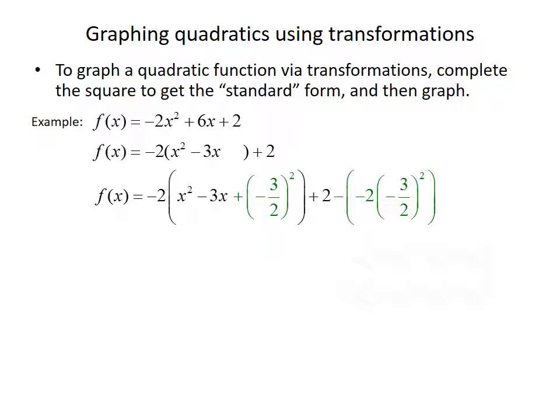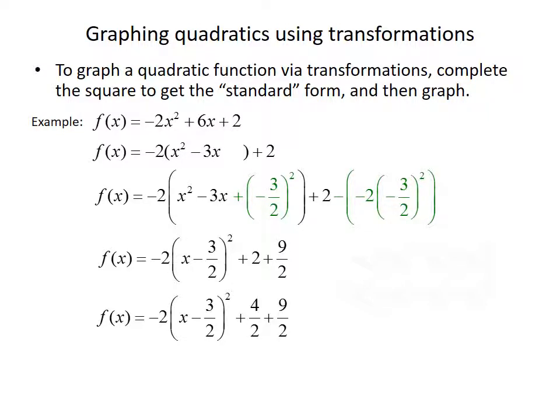We add that inside the parentheses to complete the square, and outside we need to subtract it. Since negative 3 over 2 squared is inside the parentheses, it's being multiplied by negative 2. When we subtract the term from the outside, we also incorporate that negative 2, so we subtract negative 2 times negative 3 halves squared. We can then rewrite as negative 2 times x minus 3 halves squared plus 13 halves.